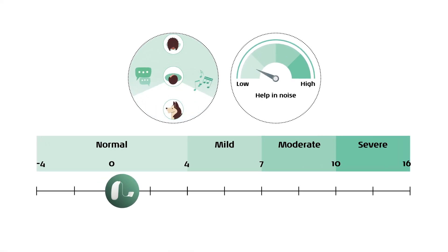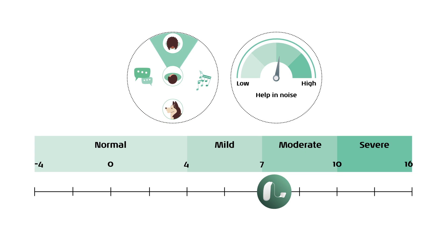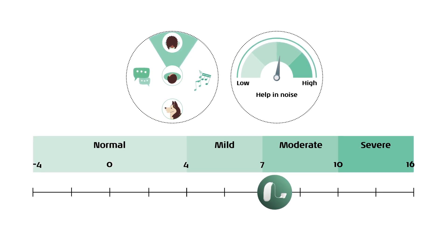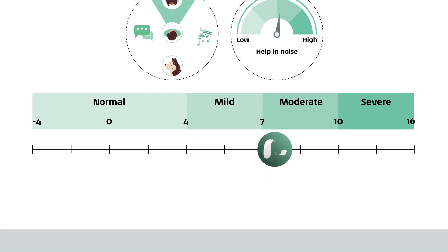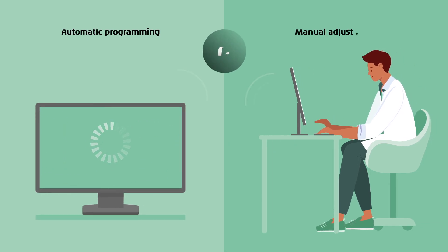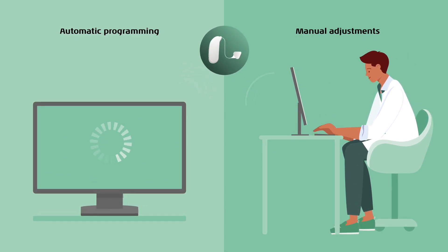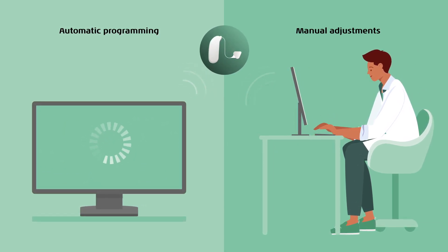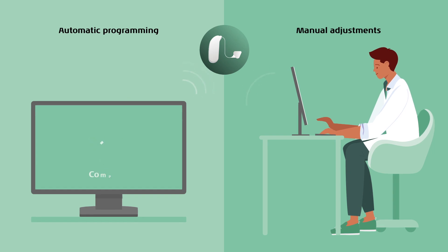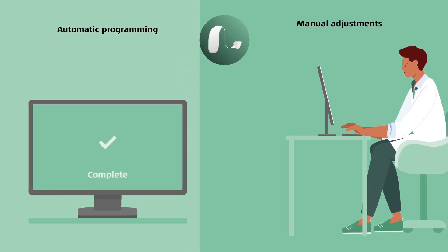The result from the ACT test — the ACT value — can then be used to guide how the hearing aid's adaptive features should be programmed. The ACT value can either be directly prescribed into the hearing aid fitting software for automatic programming, or adjustments can be made manually using the ACT counseling guide.